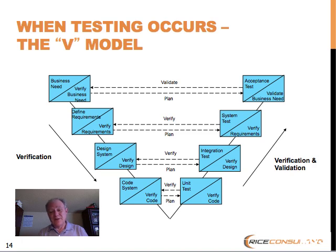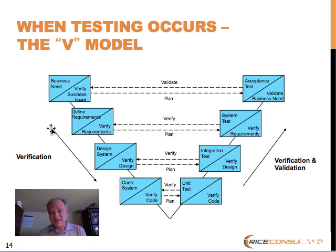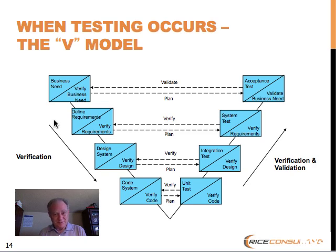The way the V kind of goes — you start out up in the upper left-hand corner with a business need. From that business need, a set of requirements are defined. Even if they're raw requirements or user stories, whatever you want to call these, it's the expression of this business need — the software shall do this, the user must do this kind of thing. Basically, a set of imperatives and business rules that reflect this business need. From that, this defines the what is needed.